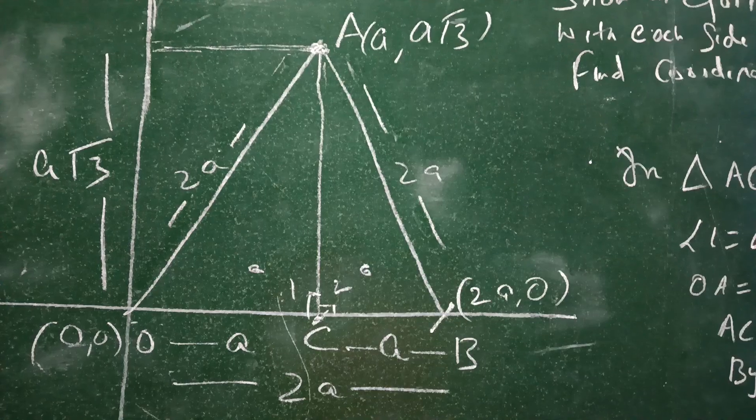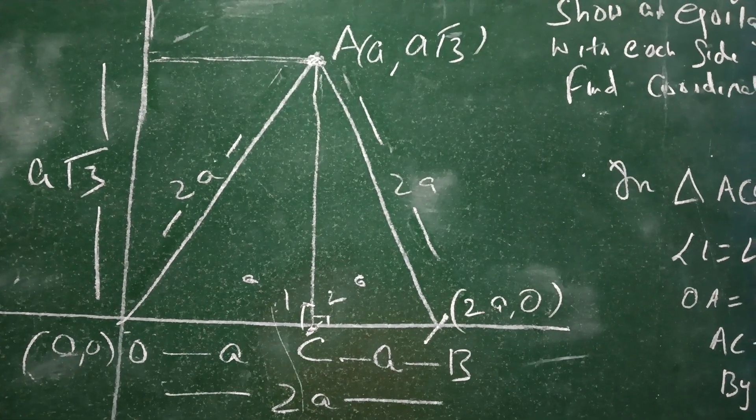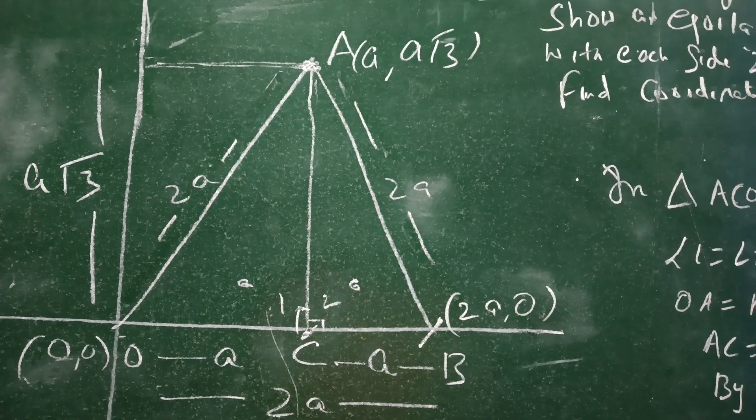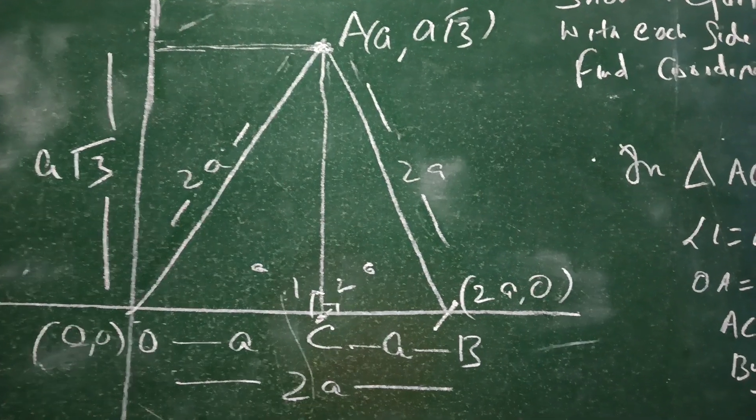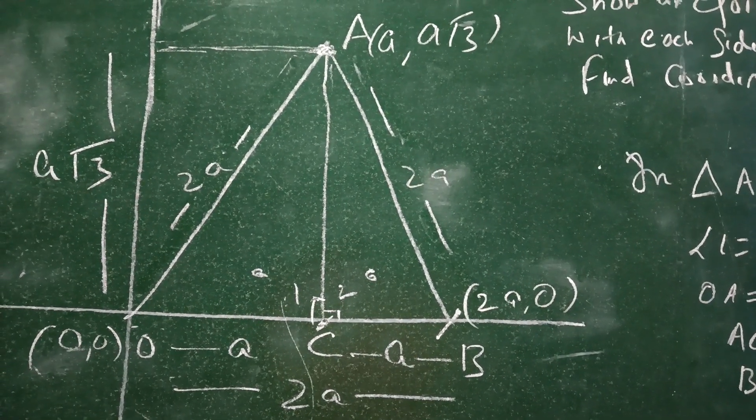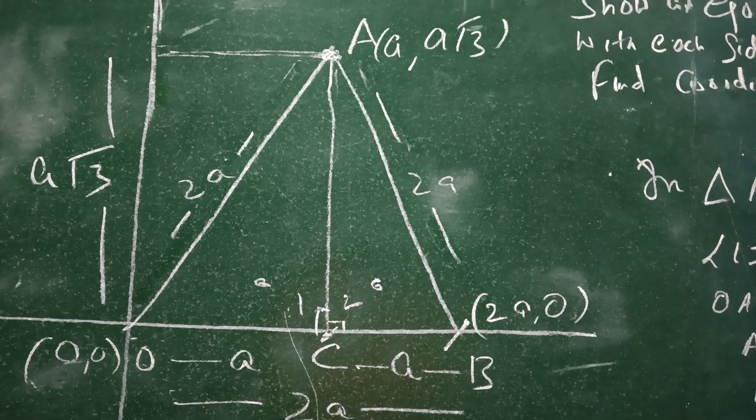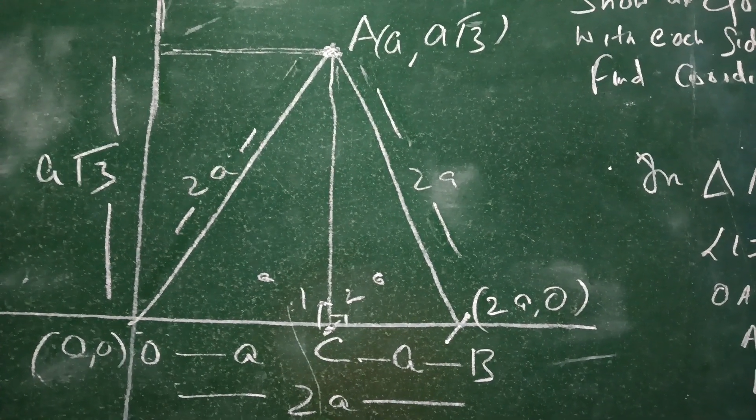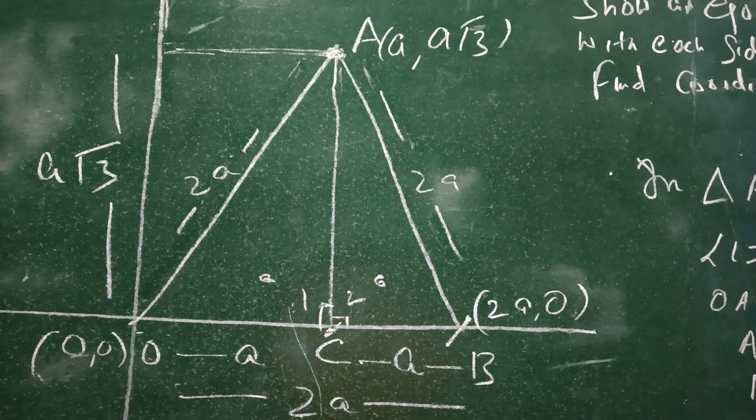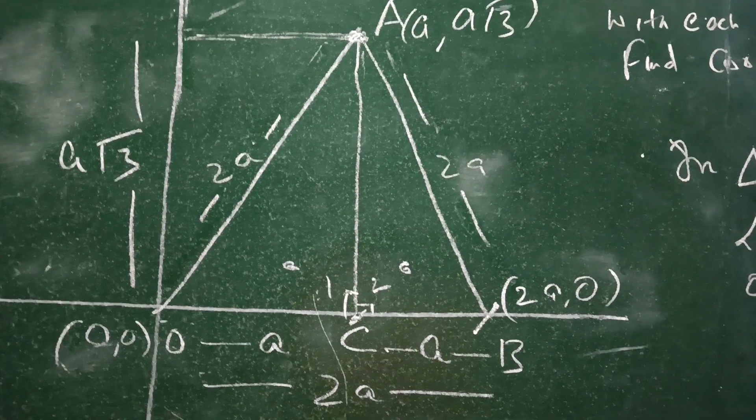If you look here, the equilateral triangle OAB has each side equal to 2a. Now we have a perpendicular drawn from A, and we have two right-angle triangles - triangle OCA and triangle BCA.